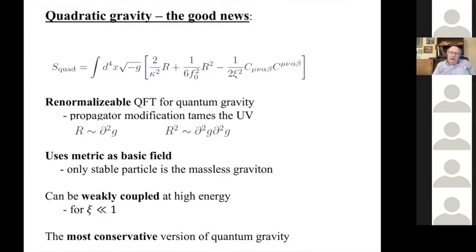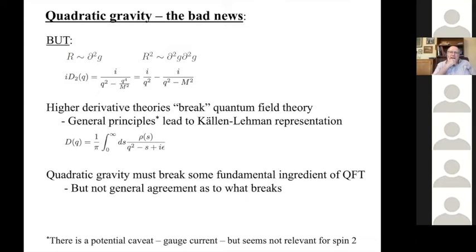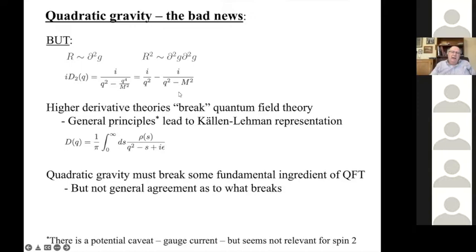It can be weakly coupled if those parameters are small, so it's a theory that seems worth exploring. The bad news is tied to the same feature: since the curvature-squared terms carry four derivatives, the propagators carry momentum to the fourth, and higher-derivative theories always do something bad for the quantum field theory. If you partial-fraction a single propagator, it has a high-mass state with the wrong sign in the propagator — that's going to lead to something bad.